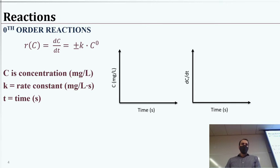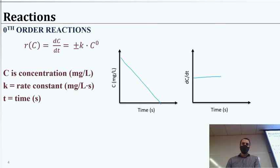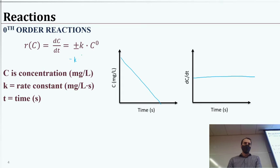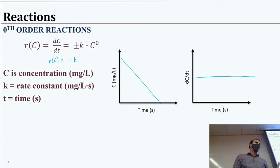For the zero order reaction — maybe a decay reaction — if we take the derivative, it's just a flat line, because the rate at which it's changing over time is not itself changing. So R(C) equals negative K. You can also determine the reaction order if you're given the units of the rate constant. In the zero order case, R(C) must be concentration per time, so K has units of milligrams per liter per second.